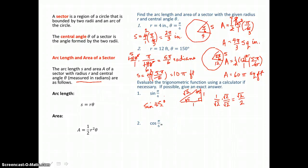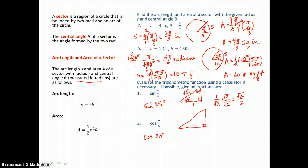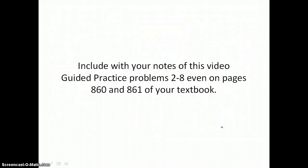Let's do the same thing with cos(π/6). Since π is 180 degrees, 180 divided by 6 is 30. So we're really finding the cosine of a 30 degree angle. Drawing that special 30-60-90 triangle, sides are in the ratio 1, 2, √3. The leg of length 1 is opposite the 30 degree angle, the hypotenuse is twice that, and √3 is opposite the 60 degree angle. Applying cosine as adjacent over hypotenuse gives √3/2. So cos(π/6) = √3/2. Include with your notes guided practice problems 2 through 8 even on pages 860 and 861 of your textbook.